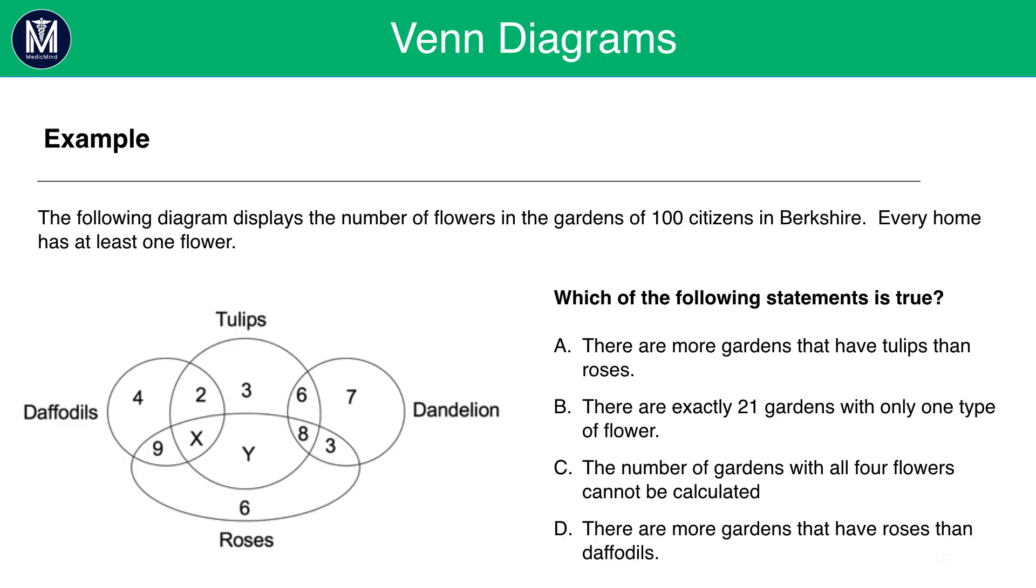So an example. The following diagram displays the number of flowers in the gardens of 100 citizens in Berkshire. Every home has at least one flower. Which of the following statements is true? A. There are more gardens that have tulips and roses. B. There are exactly 21 gardens with only one type of flower. C. The number of gardens with all four flowers cannot be calculated. And D. There are more gardens that have roses than daffodils.